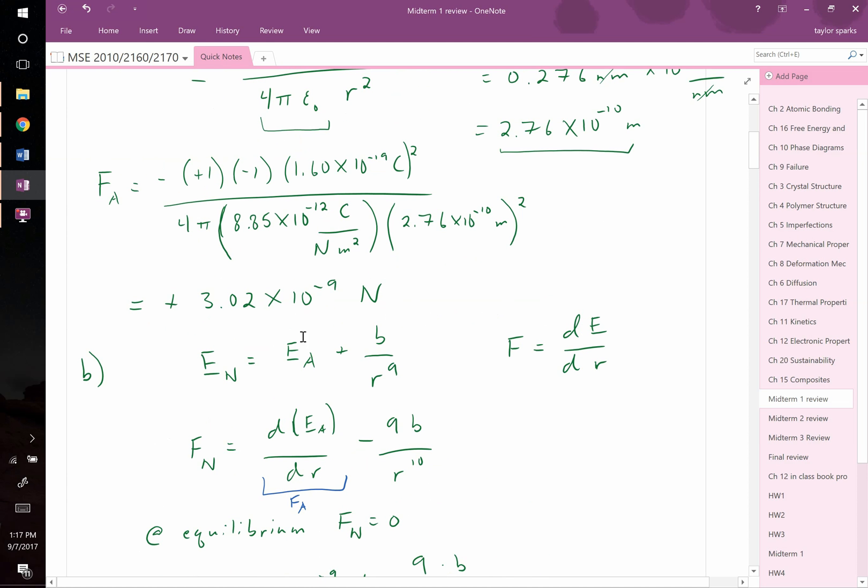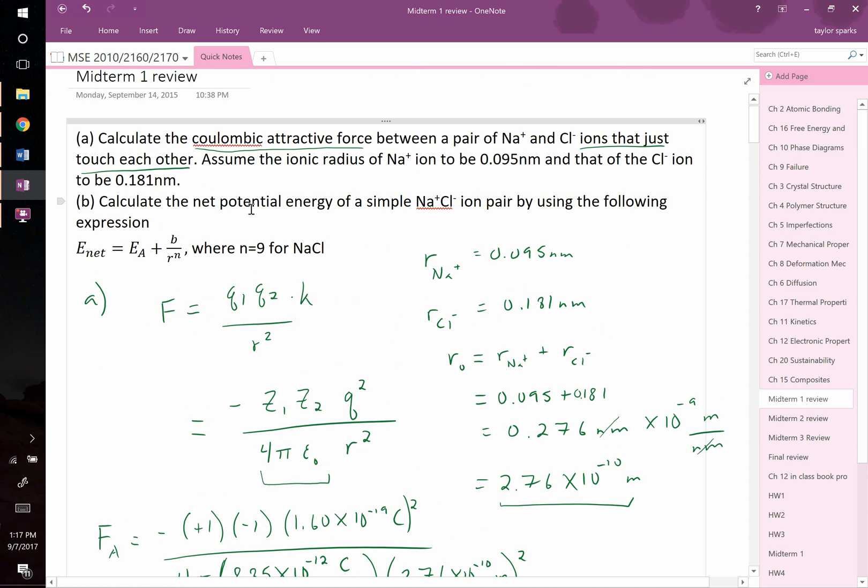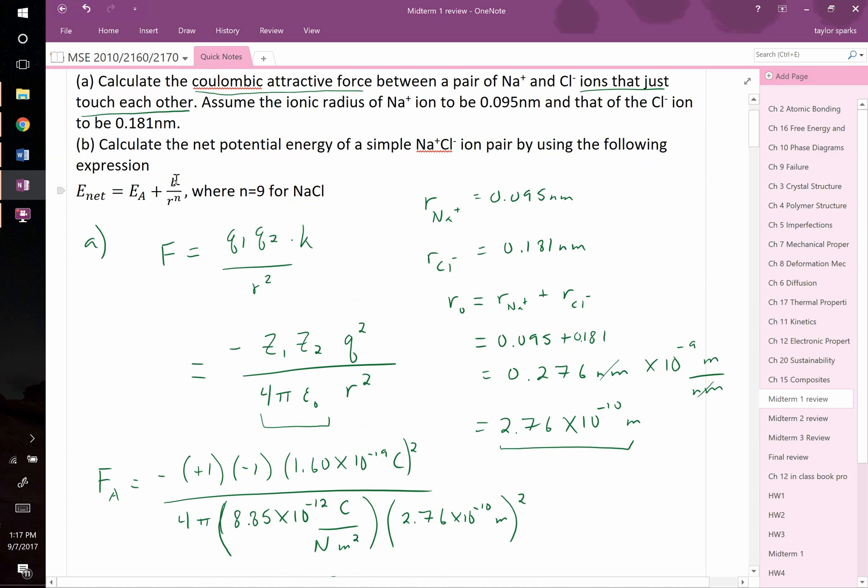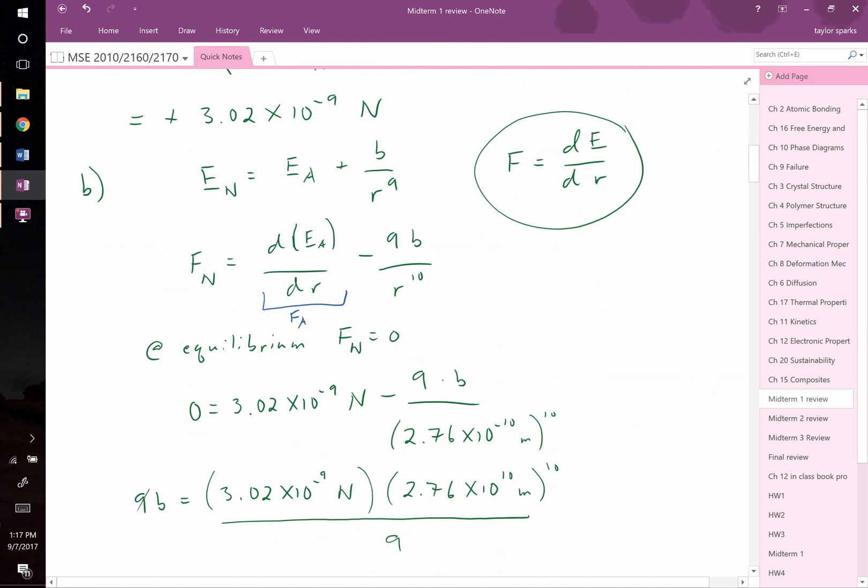So let's go back up to what we were originally asked for. They want us to solve for the potential, the net potential energy, using this expression. Well, we know what B is now. We know R. We know N. We need to figure out what Ea is. Well, we were given Fa, and we know that this relationship exists, that the force is equal to the derivative of energy with respect to interatomic separation. So now we need to know how to go backwards.